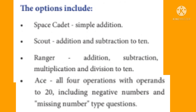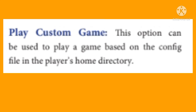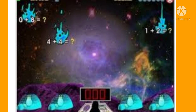The game options include: Space Cadet — simple addition; Scout — addition and subtraction to 10; Ranger — addition, subtraction, multiplication and division to 10; Ace — all 4 operations with operands to 20, including negative numbers and missing number questions. Play Custom Game allows playing a game based on a configuration file in the player's home directory.